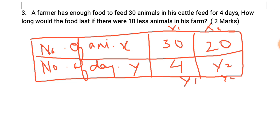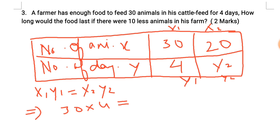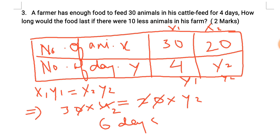This is a case of inverse variation, because as the number of animals decreases, the food lasts more days. The inverse variation formula is x1 times y1 is equal to x2 times y2. So, 30 into 4 is equal to 20 into y2. Solving: y2 is equal to 6. So in 6 days you will have food when consuming for 20 animals. This is the answer.